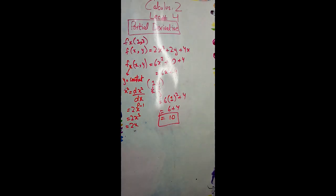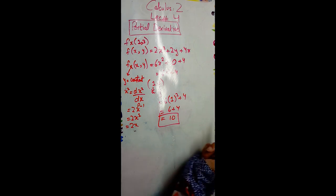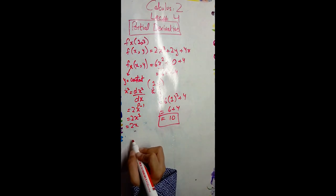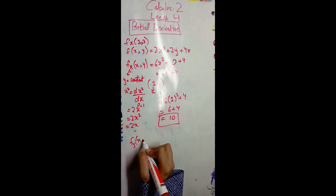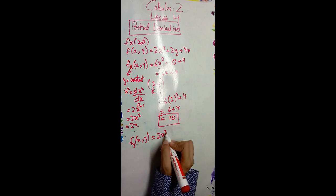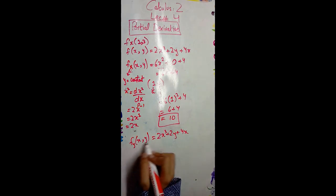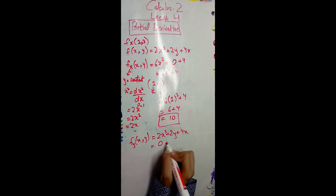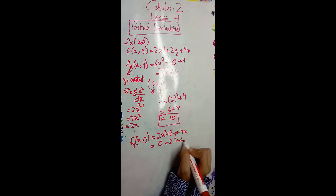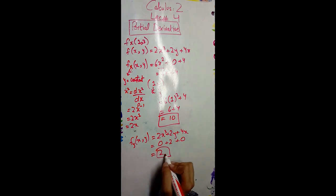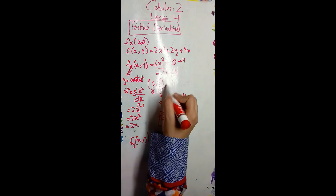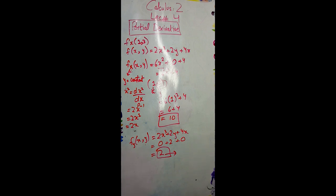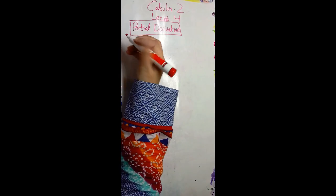Now we find f_y, where we treat x as a constant. Writing f_y(x,y) for the function 2x³ + 2y + 4x: since x is constant, all terms with only x become 0. The derivative of 2y with respect to y is 2, so f_y = 2. Since there is no remaining y variable, this is our final answer. If y had appeared elsewhere, we would substitute y = 3.